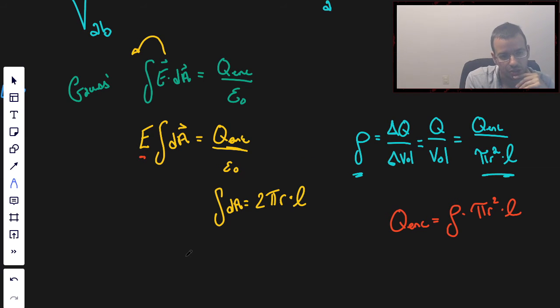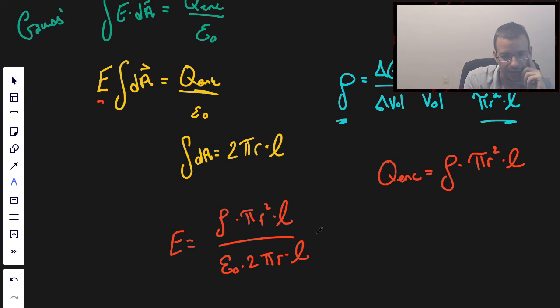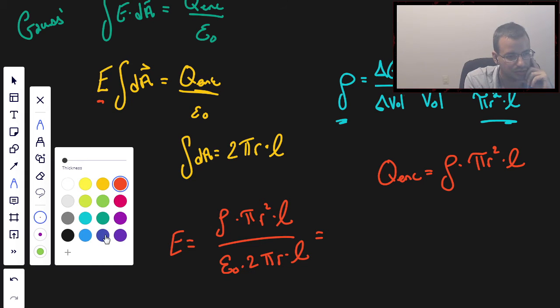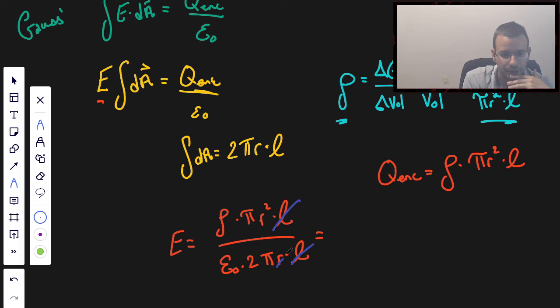All right, so now we can put this all together to get the electric field. So rearranging this, we get electric field equals q enclosed, which is rho times pi times r squared times length, all over epsilon naught, divided by the area of our Gaussian shape, 2 pi r times L. There we go. So now, simplifying things. Lengths cancel, which is good because it's infinite and it would create new difficulties. And we get rho times radius all over 2 epsilon naught, which seems reasonable.